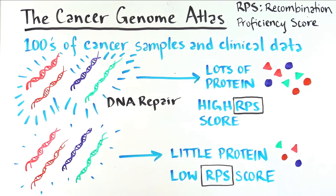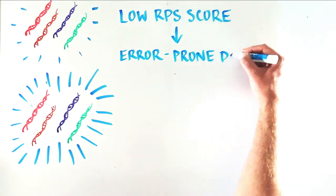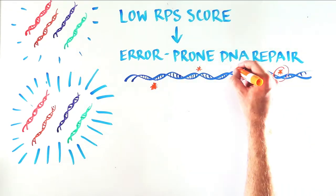Interestingly, the scientists found that in hundreds of different cancer cells, a low RPS score meant that the cells were using error-prone DNA repair and were accumulating lots of mutations.